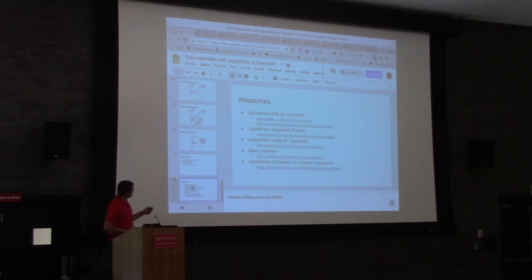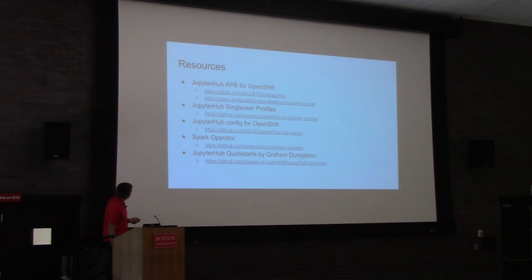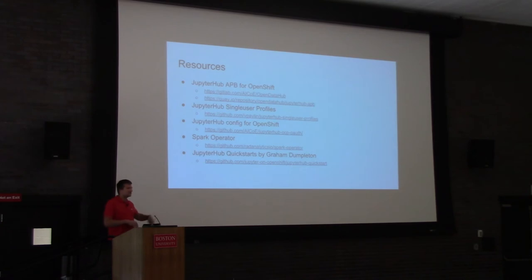That's basically everything. These are some useful links: the APB, the single-user profiles library, the OpenShift configuration for JupyterHub used in the APB, the Spark operator — a colleague from the Red Analytics team at Red Hat worked on that and it worked perfectly — and this is where we came from with JupyterHub on OpenShift: Graham Dempleton's JupyterHub Quick Start, where you can try JupyterHub on OpenShift in its simplest form without all the Spark pieces.